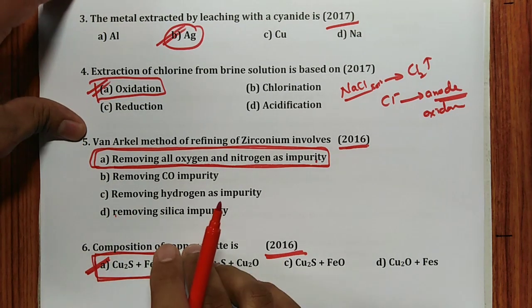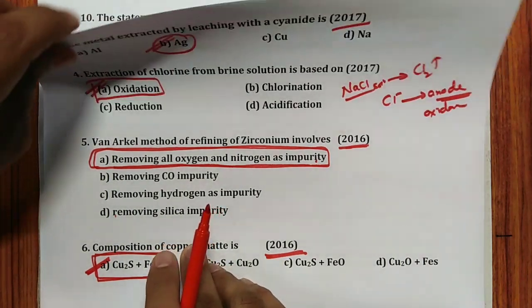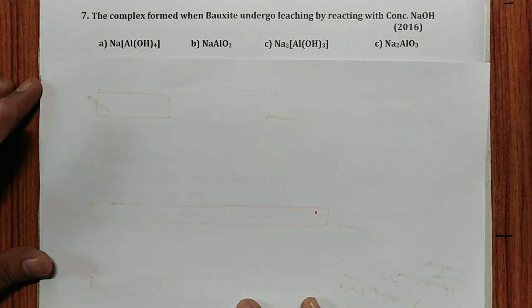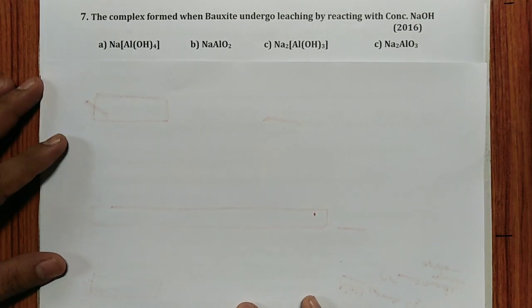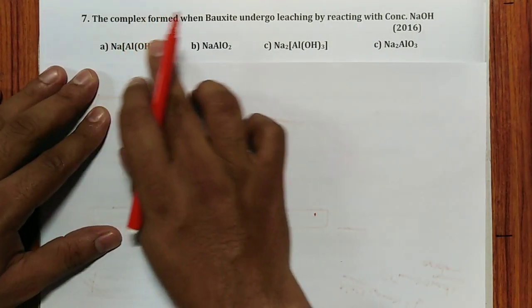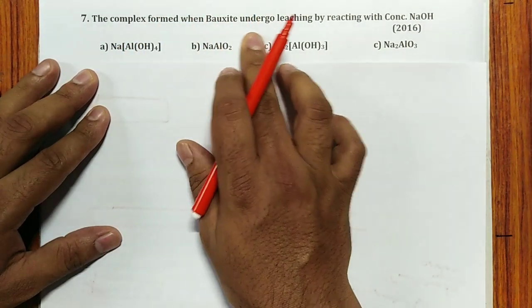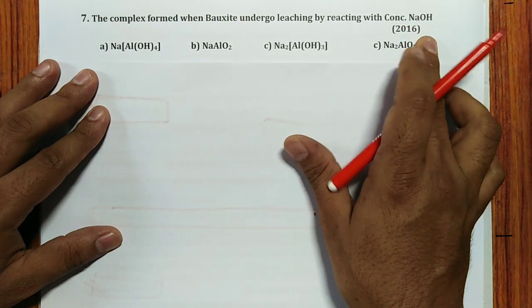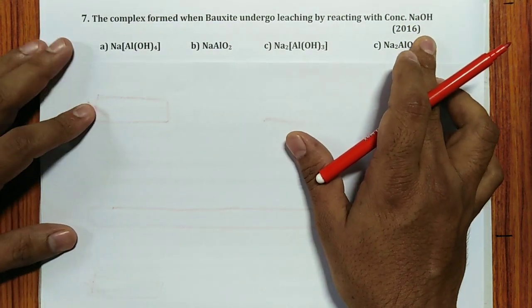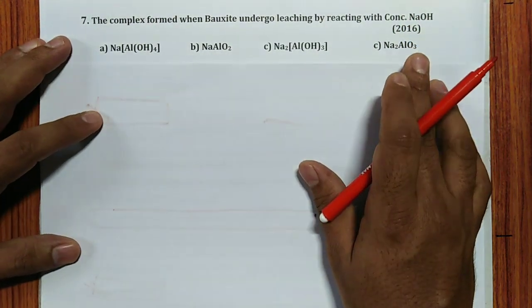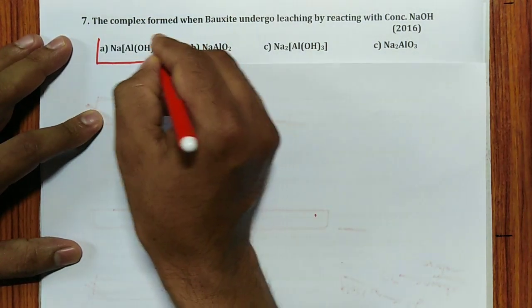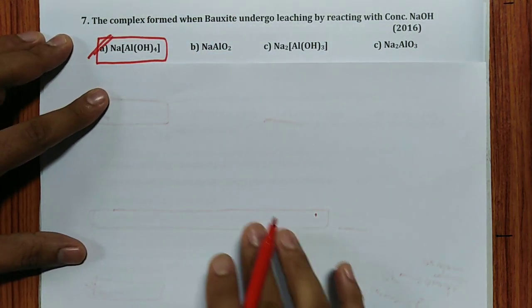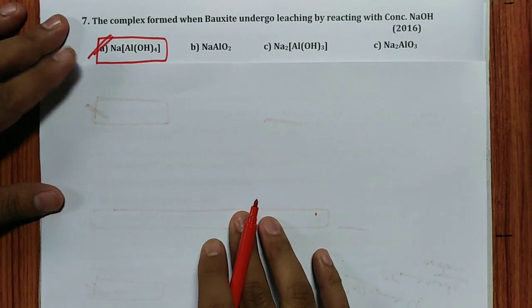Question 7 (2016): Complex formed when bauxite undergoes leaching by reaction with concentrated NaOH — the complex is sodium aluminate, Na[Al(OH)₄]. Answer is A.